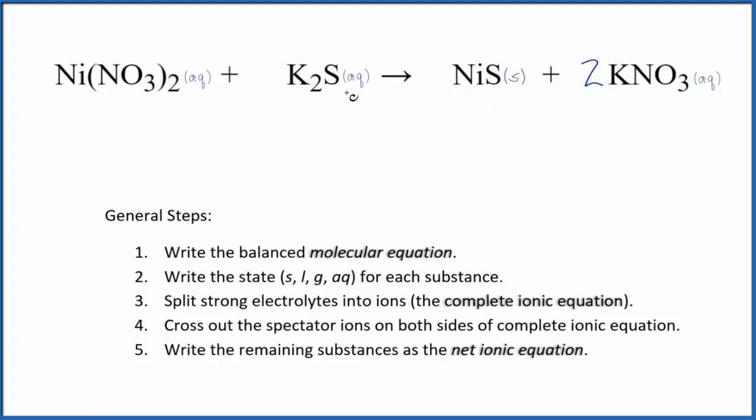Compounds with the sulfide ion in general are insoluble unless they're group one, like sodium or potassium. So potassium sulfide is going to be soluble, but nickel 2 sulfide is insoluble. So we say that it's a solid, it's going to be a precipitate. It'll fall to the bottom of the test tube when these two substances react.